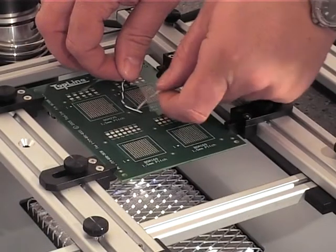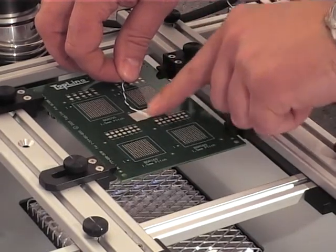Attach the K-type thermocouple to the PCB using the PDR white tape.